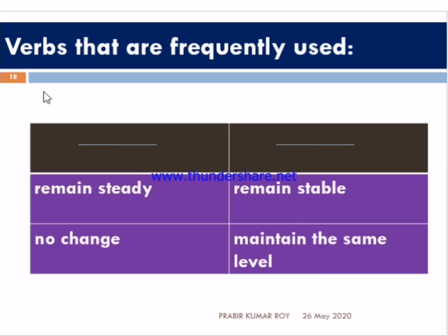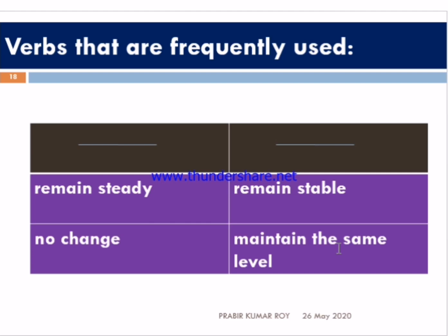There are also words for stability. If the data does not increase or decrease, you can use 'remain steady,' 'remain stable,' 'no change,' or 'maintain the same level.' Some adverbs that are frequently used include: dramatically, significantly, sharply, rapidly, slightly, suddenly, gradually, and slowly.